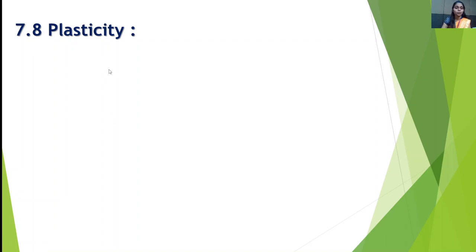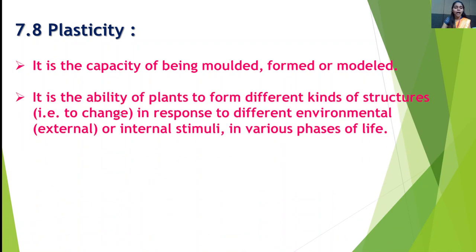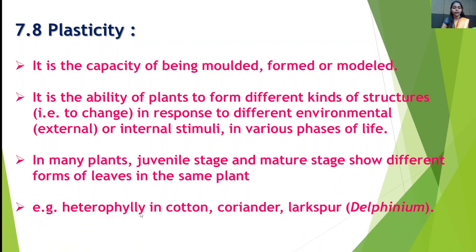The next point is plasticity. Plasticity is the capacity of being molded, formed or modeled. It is the ability of a plant to form different kinds of structures — that is, to change in response to different environmental or internal stimuli in various phases of life. In many plants, the juvenile stage and mature stage show different forms of leaves in the same plant. This is called heterophylly, as seen in cotton, coriander and larkspur.